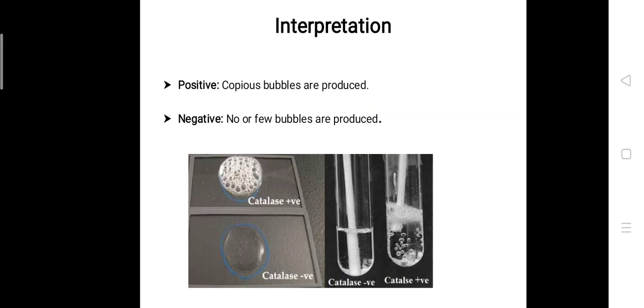Oxygen is a product of hydrogen peroxide and water catalyzed by catalase. Since oxygen is a gas, it's released in gaseous form, which causes bubbling. This indicates that if there is bubbling either on your slide or in the tube, the organism has catalase enzyme present.